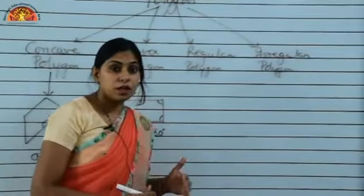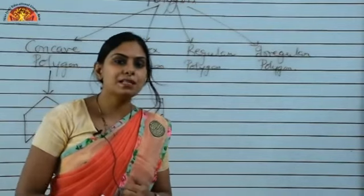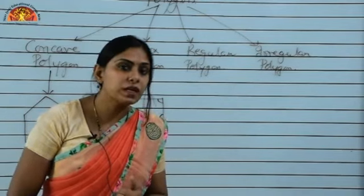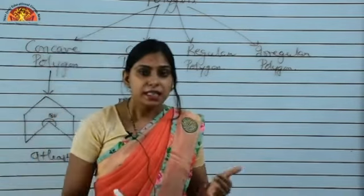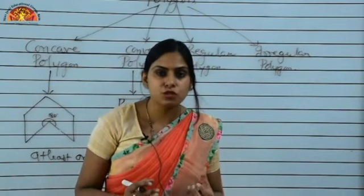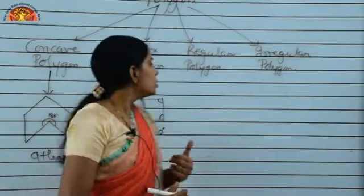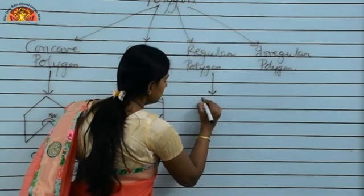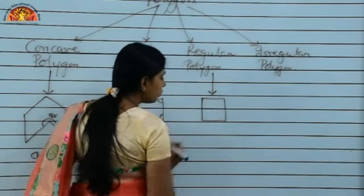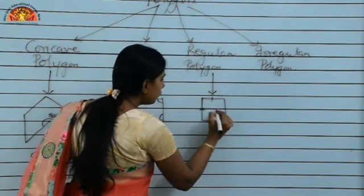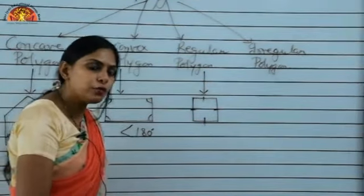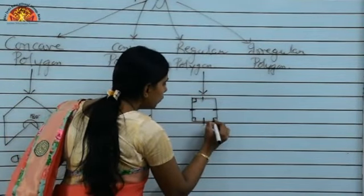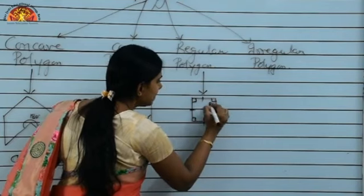Now, a regular polygon is a polygon in which all the sides and all the angles are of equal measurement. For example, if I draw a square, you can see that all four sides are of equal measure and all angles are also equal — that is 90 degrees.